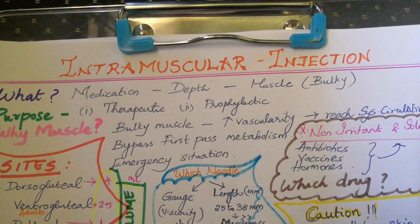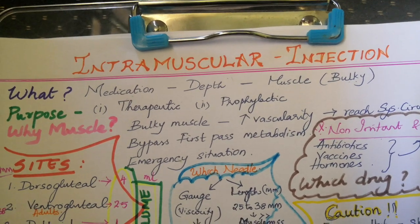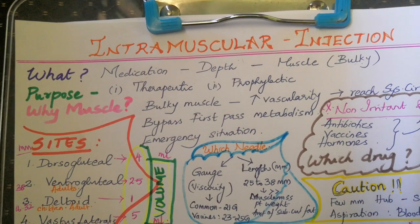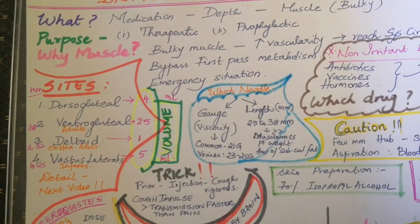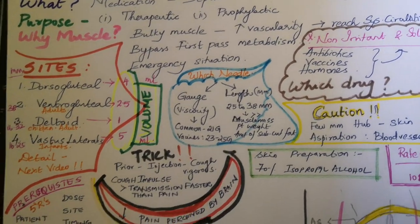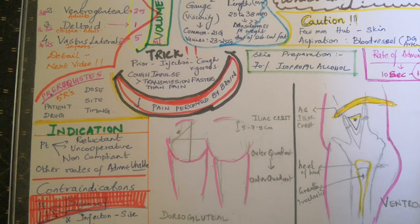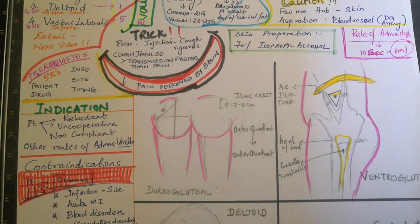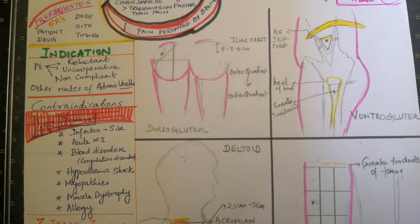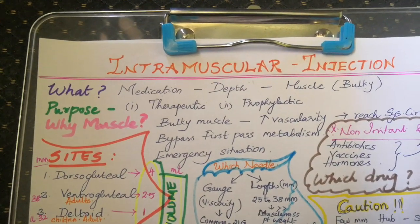Today's video is on intramuscular injection. We will cover what intramuscular injection is, its purpose, why muscle is opted, the sites, volume, needle selection, cautions, tricks, prerequisites, rate of administration, indications, contraindications, and how to locate the anatomical sites in detail. Watch the video till the end to gain more knowledge.